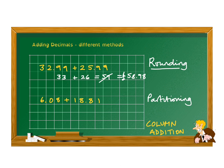These two numbers are 6.08 and 18.81. We're done with rounding, move on. Right, partitioning as I was saying, 6.08 plus 18.81.